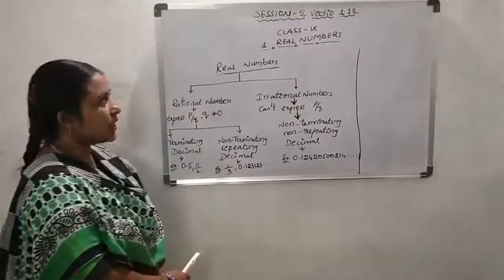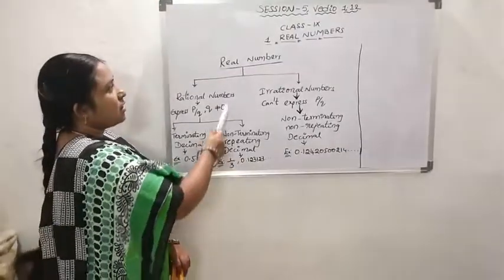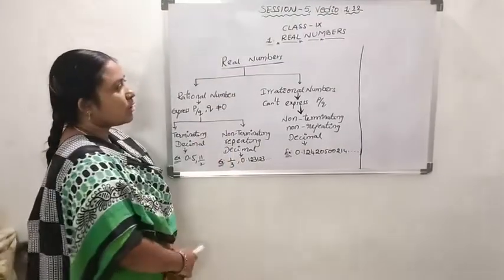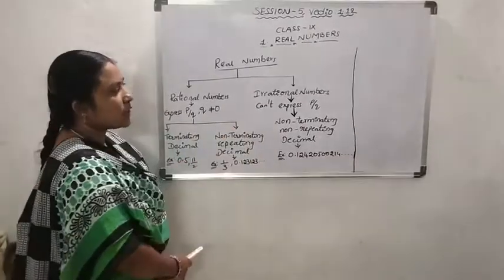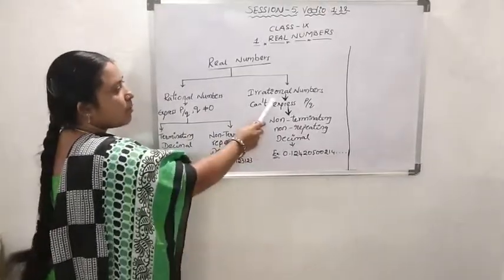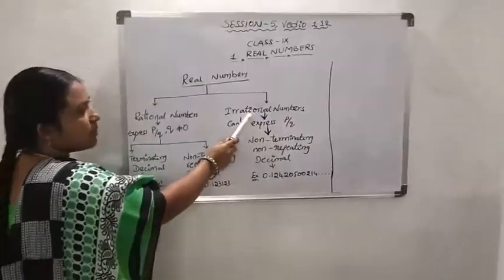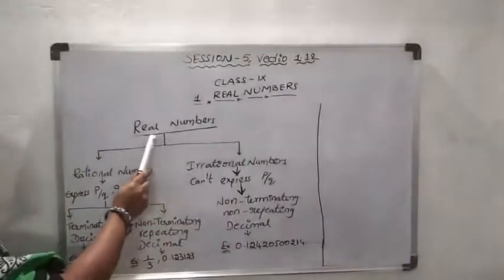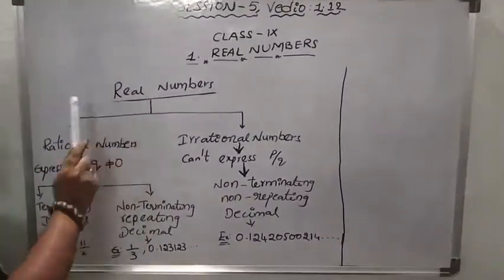Chapter 9: Real Numbers. Today our topic is to learn about what is an irrational number. Before going to learn irrational numbers, first of all we will discuss what are real numbers.